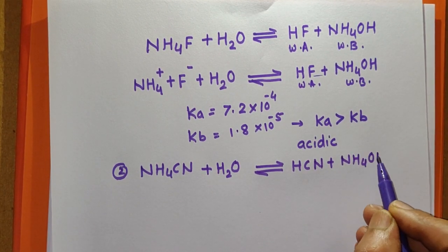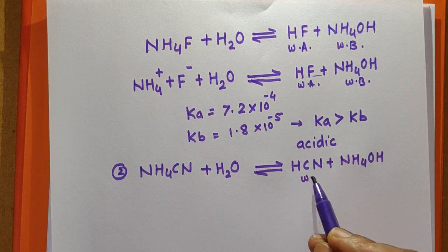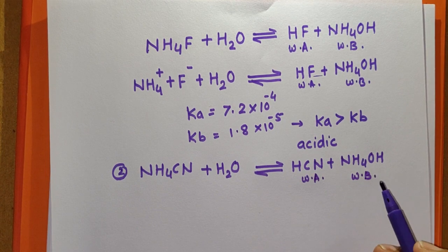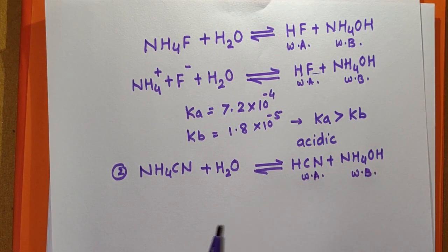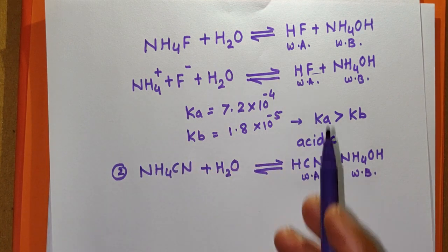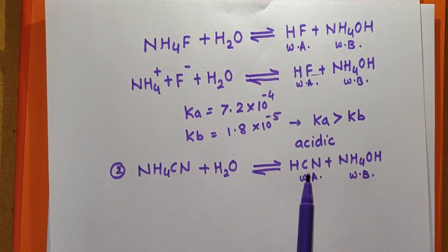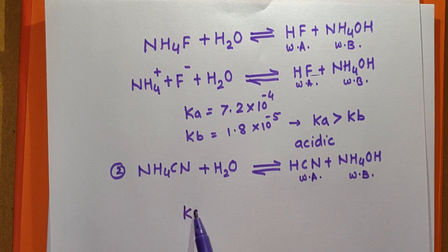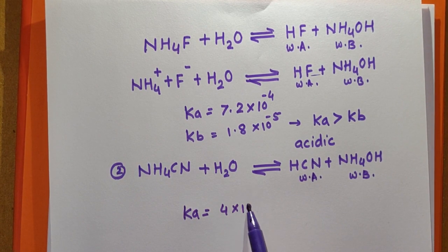For NH₄CN, the ionization gives NH₄⁺ and CN⁻ ions, which react with water to give HCN and NH₄OH. The Ka for HCN is 4 × 10⁻¹⁰.